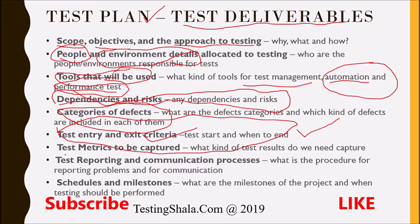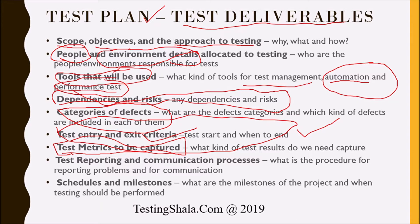The next item to track in the test plan is the test matrix. This is very important for stakeholders, especially the senior leadership team, who would like to know the testing progress for the project and see whether testing is going in the right direction. The test matrix gives enough indications of how we are moving from the beginning to the end of the release.